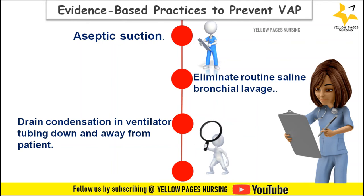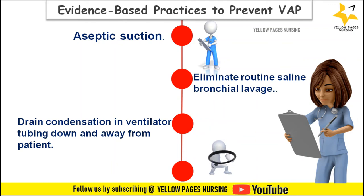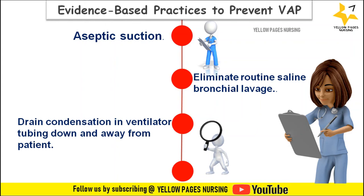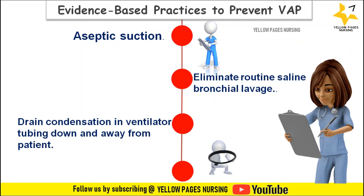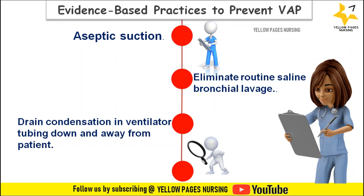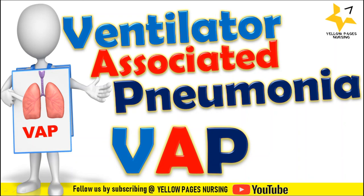These are some evidence-based practices for prevention of ventilator-associated pneumonia, and the number of interventions may vary from hospital to hospital based on their policies. These are implemented through bundle checklists, and a few reference links are given in the description below. So this is all about ventilator-associated pneumonia. If you find this video useful, please like, share, and subscribe, and do not forget to hit the bell icon to receive instant notifications. Thanks for watching and have a nice day.